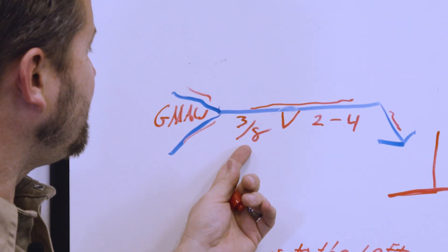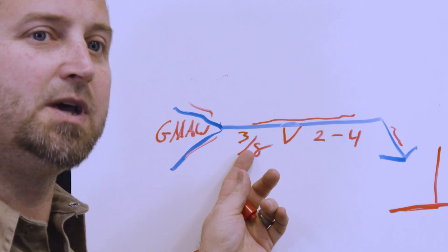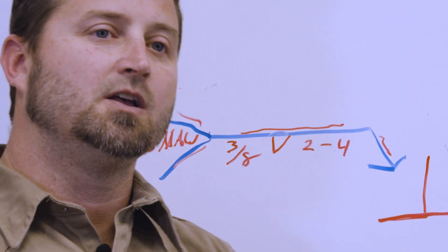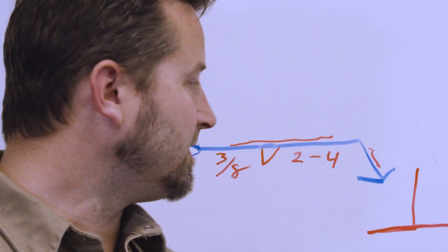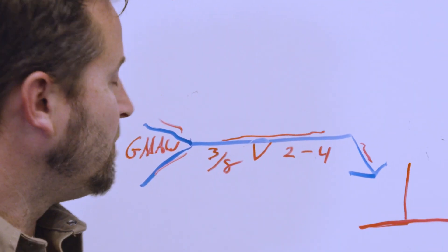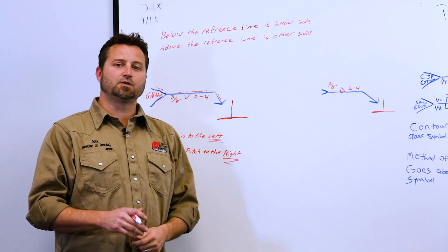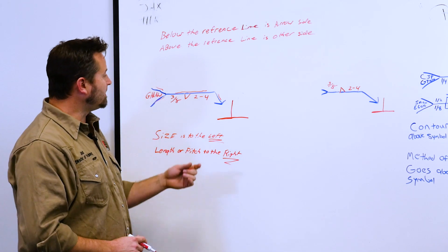So to the left of our fillet weld is going to be our size, so how big of a weld it's going to be. So we have 3/8ths up here, that means we're going to have a 3/8ths weld, our leg length is going to be 3/8ths on the sizes of the legs. Then on the 2 and the 4, what does that mean? It's going to be an intermittent weld, means that you're going to have 2 inches of weld for every 4 inches, and that's based off center to center. We'll get into more detail of that as well.